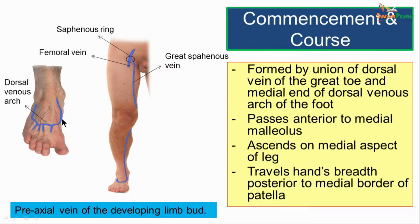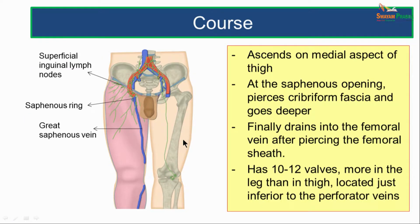Once formed, the great saphenous vein passes upwards going anterior to the medial malleolus — about 2.5 cm anterior to the medial malleolus. It ascends on the medial aspect of the leg, about one finger's breadth posterior to the medial border of the tibia. It then goes posterior to the knee joint about a hand's breadth posterior to the medial border of the patella, and further ascends on the medial aspect of the thigh to reach the saphenous opening.